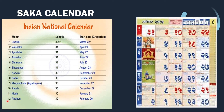The Saka calendar is a Hindu calendar. The Saka calendar year starts on March 22.